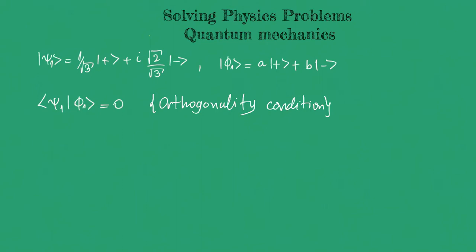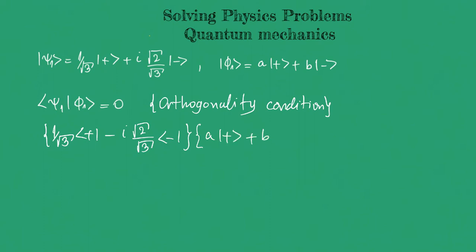Let's calculate this inner product following the rules we've learned in the previous videos. We have (1/√3)⟨+| − (i√2/√3)⟨−|, multiplied by our general |φ₁⟩ = a|+⟩ + b|−⟩, equal to 0.